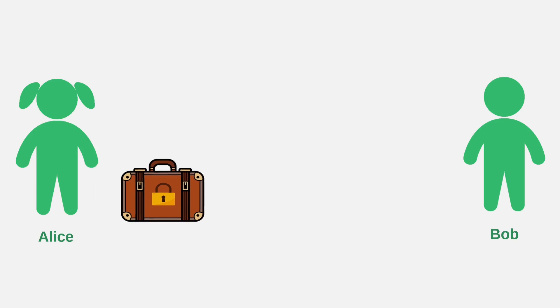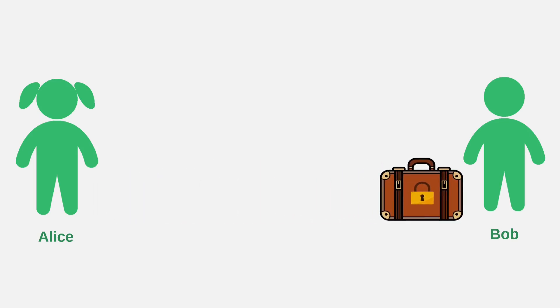This setup keeps the data safe in transit, but creates another problem. How can Alice securely share a duplicate key with Bob?